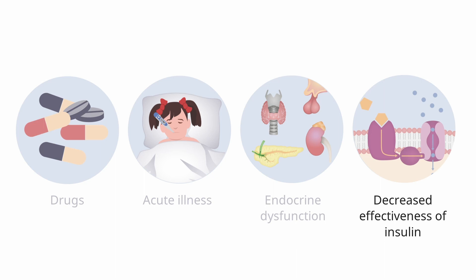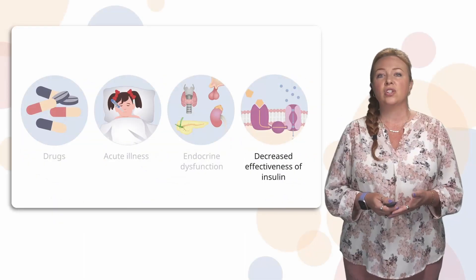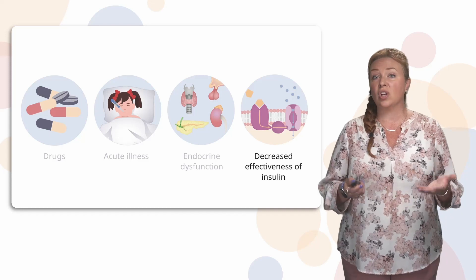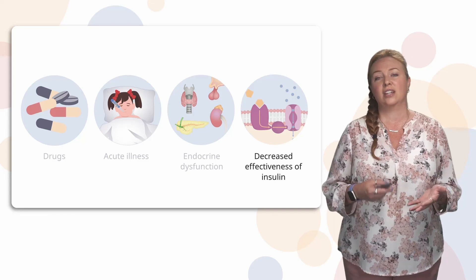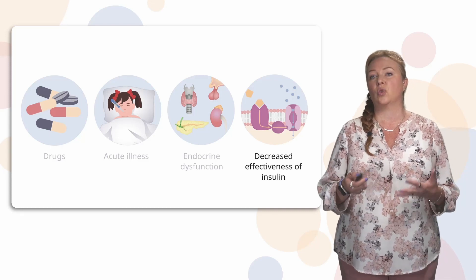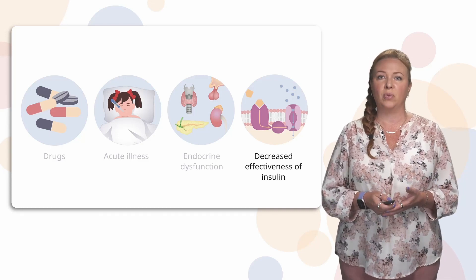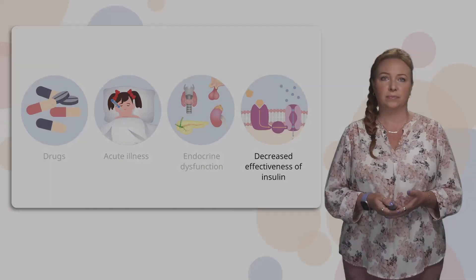Additionally, there are a few conditions that can cause decreased effectiveness of insulin that aren't necessarily associated with diabetes. Acromegaly, thyrotoxicosis, and Cushing's disease are a couple of examples of this.